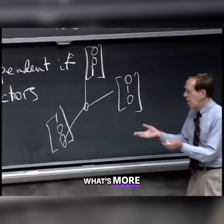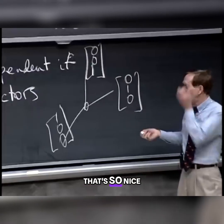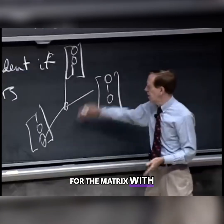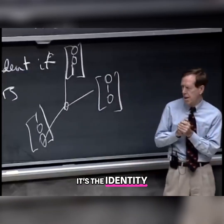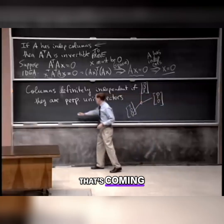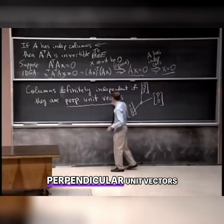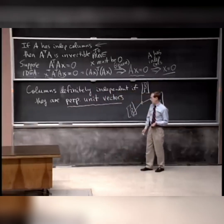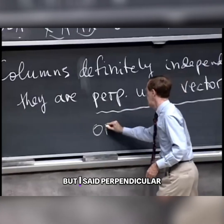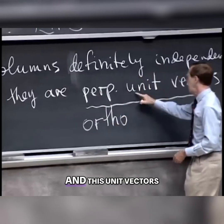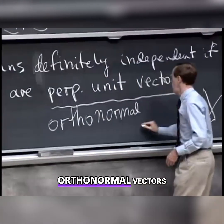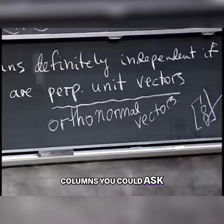And what's more — that's so nice. What is A transpose A for that matrix, for the matrix with these three columns? It's the identity. So here's the key to the lecture that's coming: if we're dealing with perpendicular unit vectors, the word for that will be 'ortho' — I could have said orthogonal but I said perpendicular — and 'unit vectors' gets put in as the word 'normal.' Orthonormal vectors — those are the best columns you could ask for.